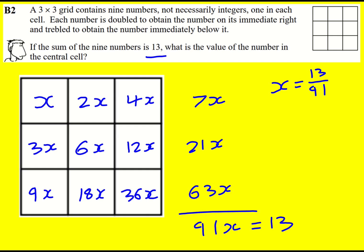Now it turns out that 13 actually goes into 91 in fact 7 times. So the answer for x is going to be 1 over 7.